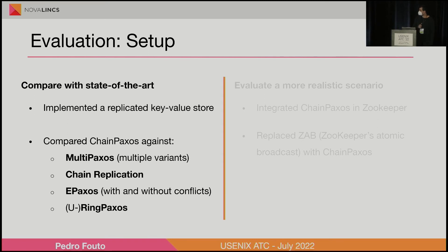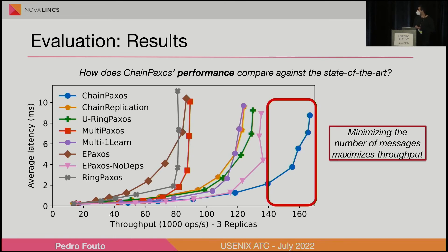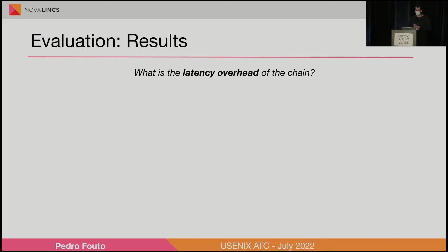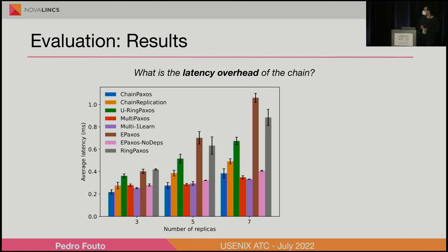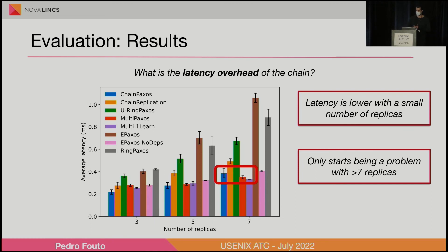Starting with how it performs against state-of-the-art: our conclusions were that it performs pretty well. The conclusion is quite simple — if you minimize the number of messages propagated and handled by each node, throughput is optimal. Regarding the latency of the chain, we executed tests using different numbers of replicas: three, five, and seven. Our conclusions were actually quite surprising — with a low number of replicas we can have lower latency than other solutions. As expected, when we get a higher number of replicas the latency starts increasing. However, it requires at least seven or more replicas before it becomes a problem.